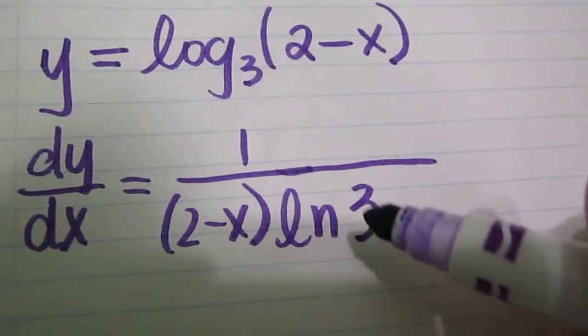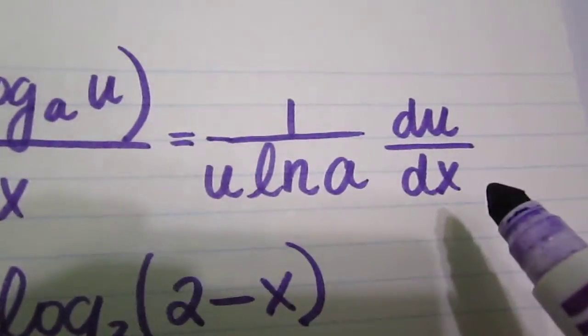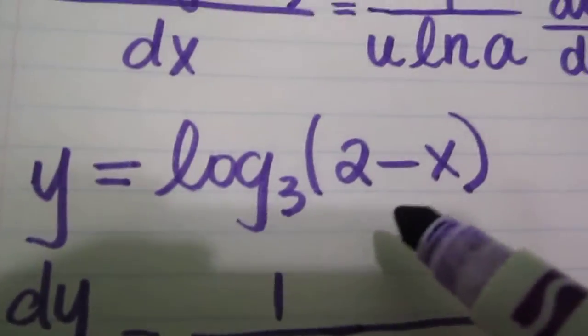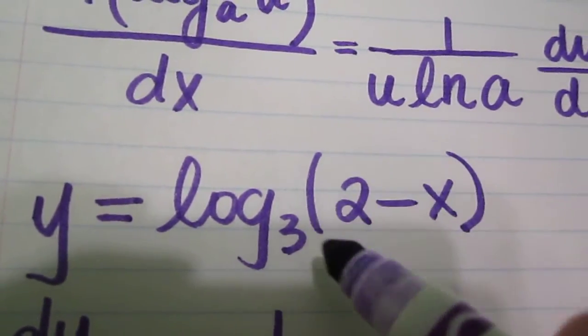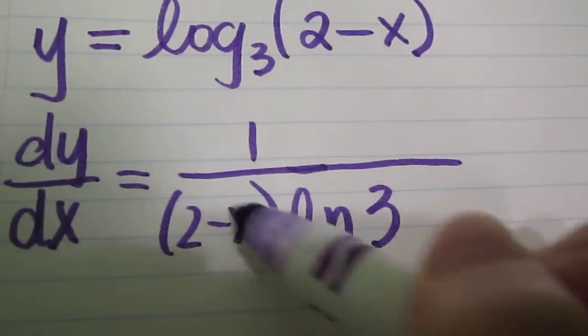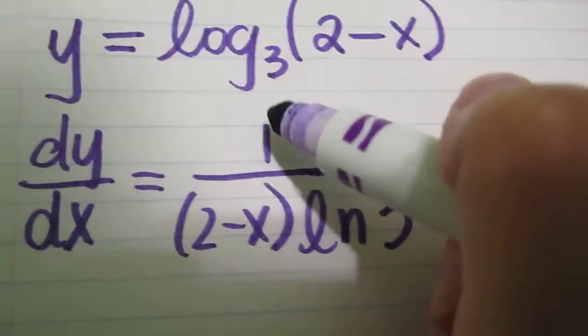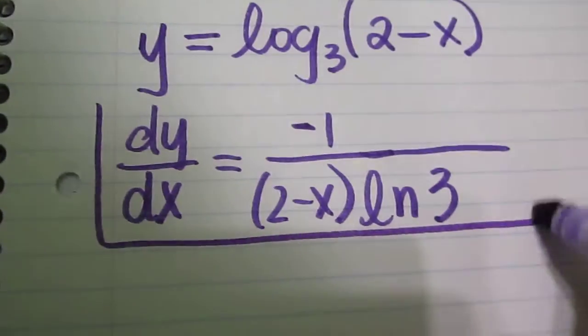And do not forget multiplying it by du dx. Remember our u was 2 minus x, and that's not just x, so you have to take into account the derivative of this entire thing, which is negative 1. So you're going to multiply this by negative 1. You just put that here. And so, that's your answer. You just put it together.